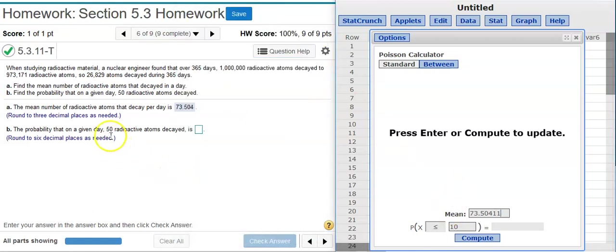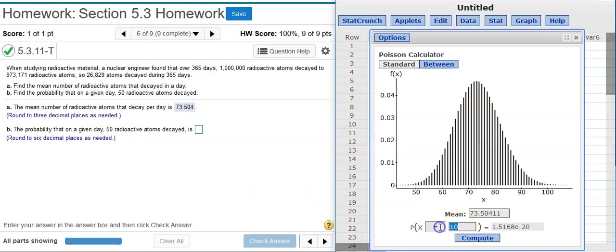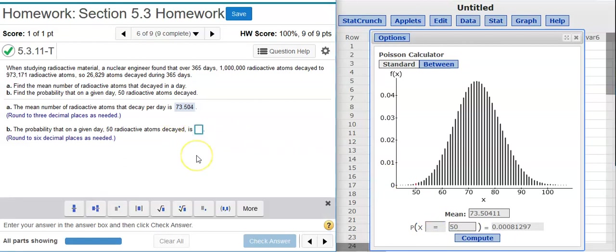And then we want the probability that X equals 50. 50 is our random variable here, so I've got to change this to an equal sign, and I'm going to change this number to 50. And voila! Here we're asked to round our probability out to six decimal places.